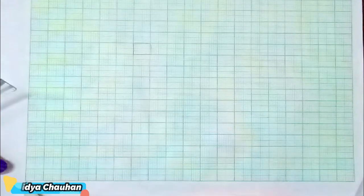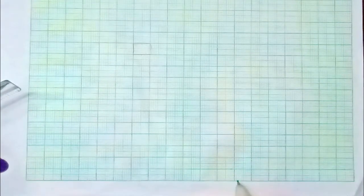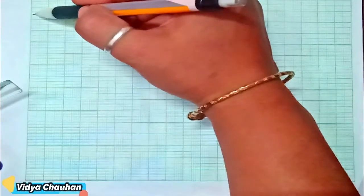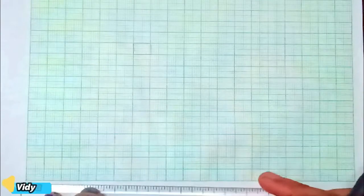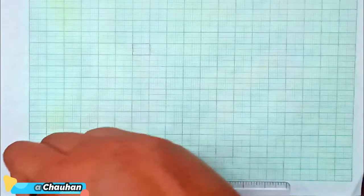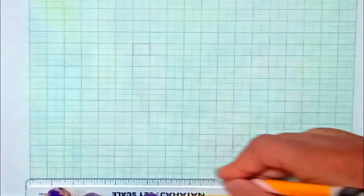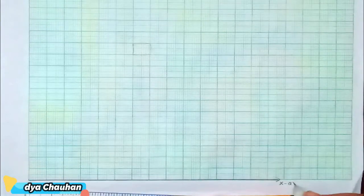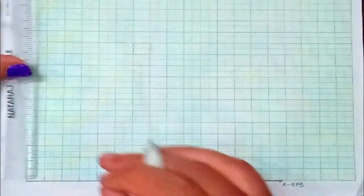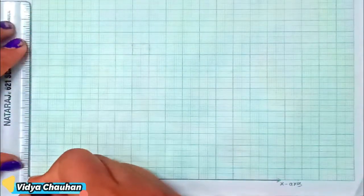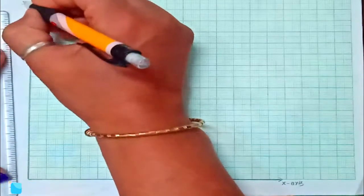On the x-axis, that is the horizontal line, we represent one value, and on the y-axis, the vertical line, we represent the second value. Since this question is about population of India in different decades, we will first draw these two axis lines — the x-axis and the y-axis.